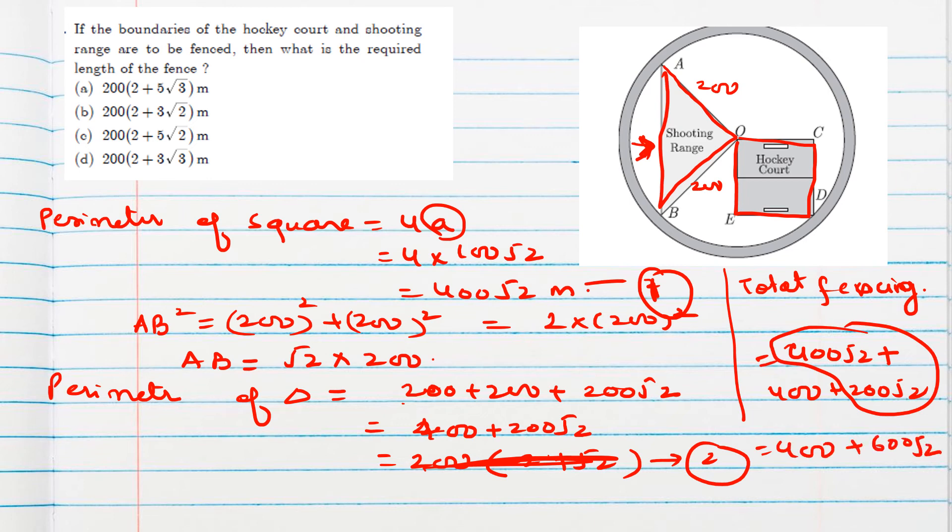Is there any option? No, they took 200 common. So if we take 200 common, here 2 will remain, here 3 will remain. 2 plus 3 root 2 inside the bracket. 2 plus 3 root 2, B option is the correct option. So fencing area means perimeter of triangle plus perimeter of square.